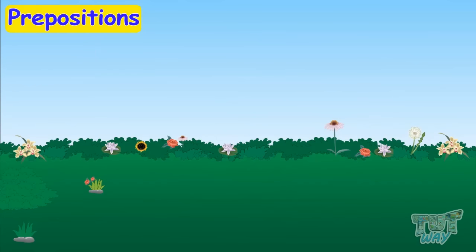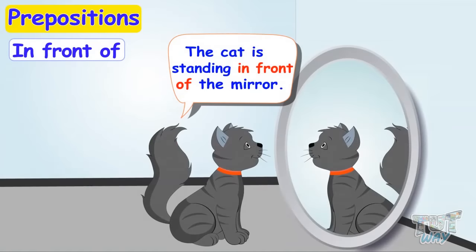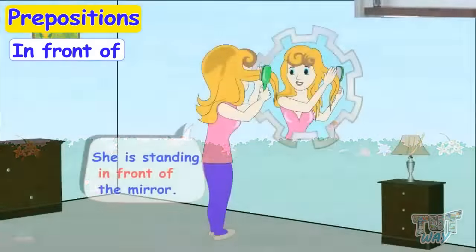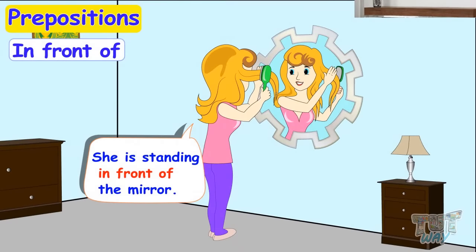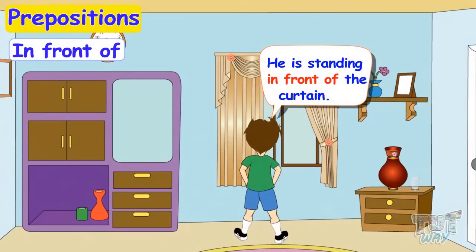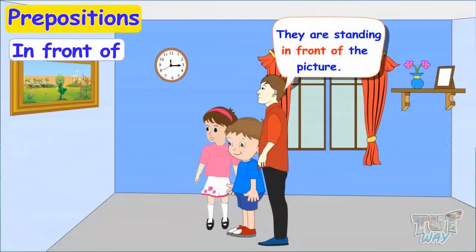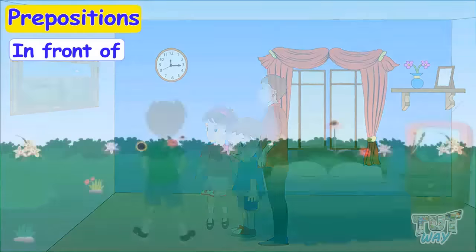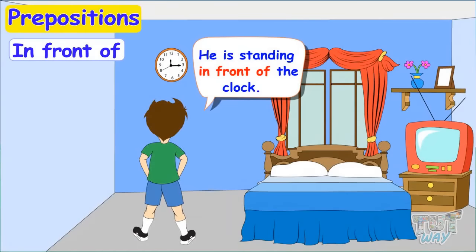We have done so many prepositions. Next is 'in front of'. The cat is sitting in front of the mirror. She is standing in front of the mirror. He is standing in front of the curtain. They are standing in front of the picture. He is standing in front of the clock.